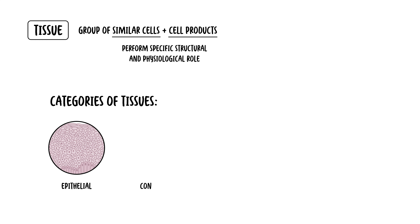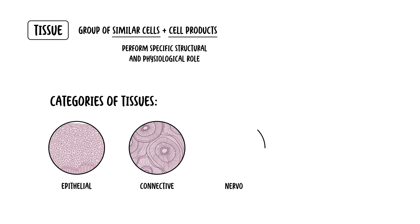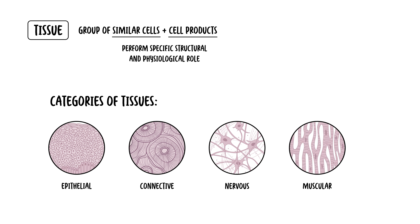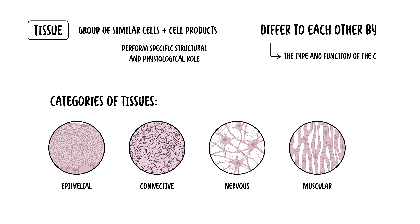These are epithelial tissue, connective tissue, nervous tissue, and muscular tissue. The tissues differ from each other by the type and function of the cells that make them up. The tissues also differ by the characteristics of the matrix, which is the substance that surrounds the cells, and the amount of space occupied by the matrix versus the cells — so the ratio, essentially.